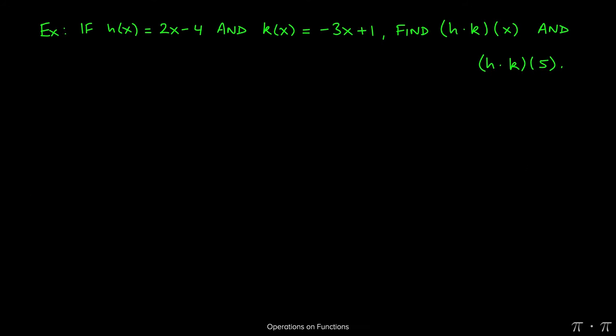In this problem we're given two functions, h(x) and k(x), with h(x) = 2x - 4 and k(x) = -3x + 1.